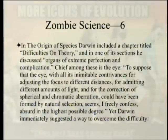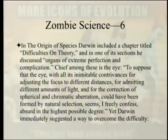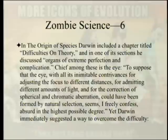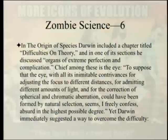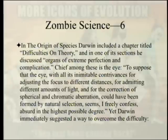In 'The Origin of Species,' Darwin included a chapter titled 'Difficulties on Theory,' where he discussed organs of extreme perfection, chief among them the eye. He wrote: 'To suppose that the eye, with all its inimitable contrivances for adjusting focus, admitting different amounts of light, and correcting spherical and chromatic aberration, could have been formed by natural selection seems, I freely confess, absurd in the highest possible degree.' This echoes Dawkins' observation that biology studies extremely complicated objects that give the appearance of being designed. Darwin likely wouldn't have raised the eye at all had he not already had a response ready.